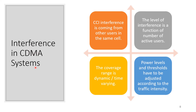For CDMA interference, three key points: First, co-channel interference (CCI) comes from other users in the same cell — not from other cells — since all users in the same cell share the same frequency, differentiated only by code. Second, the level of interference depends on the number of active users; more users means more interference since codes may not be perfectly orthogonal and can have some correlation. Third, coverage range is dynamic and time-varying with active users, so power levels and thresholds must be adjusted according to traffic intensity — power control is critical.